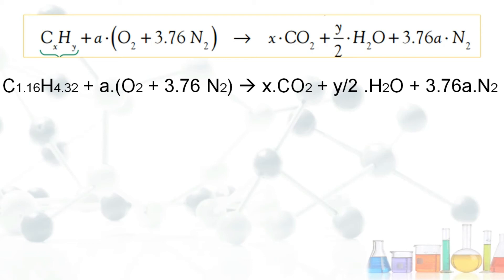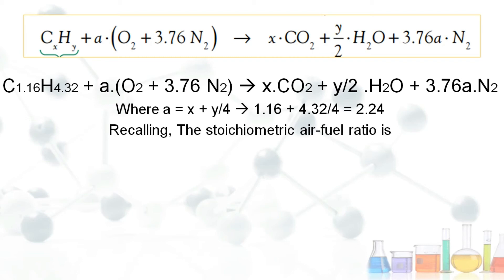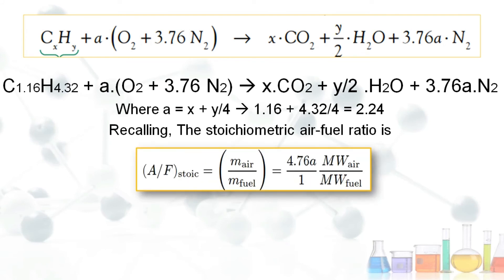Applying these values in the formula A = X + Y/4 gives A = 1.16 + 4.32/4 = 2.24. Now we can calculate the stoichiometric air-fuel ratio using: (A/F)_stoich = 4.76 × A × MW_air / MW_fuel.